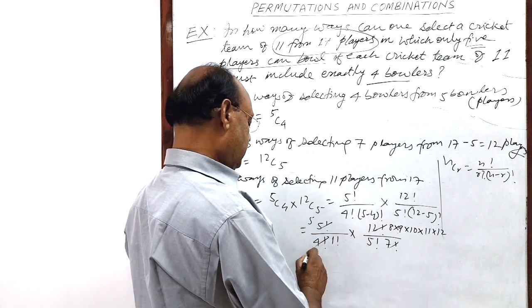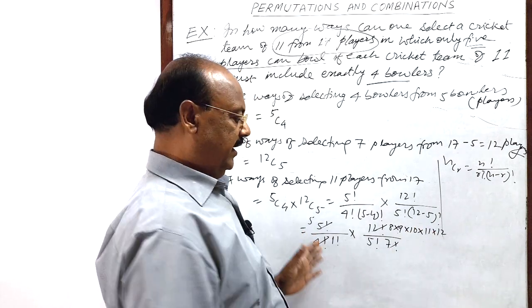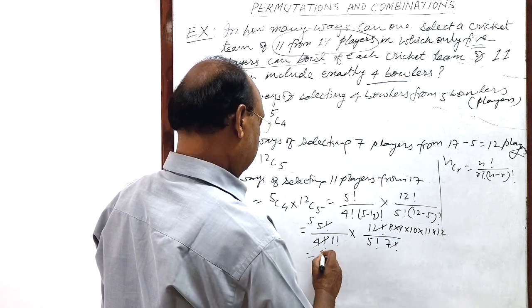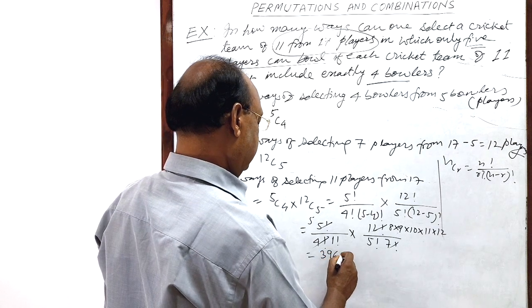So just you simplify it. You can do it very easily. And after simplification, the answer which you will get will be 3960.